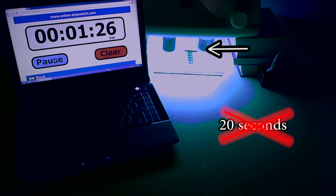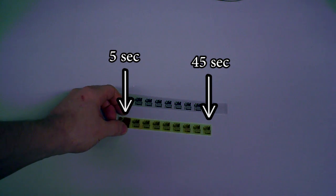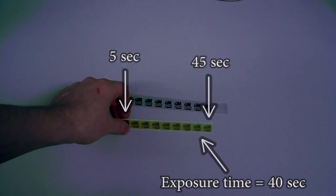Later, I found that 20 seconds was too long, and I had to redo the test using steps of 5 seconds. After developing and etching the PCB, which I will show later, I decided to take 40 seconds as the optimal exposure time, because it gave the sharpest layout resolution.